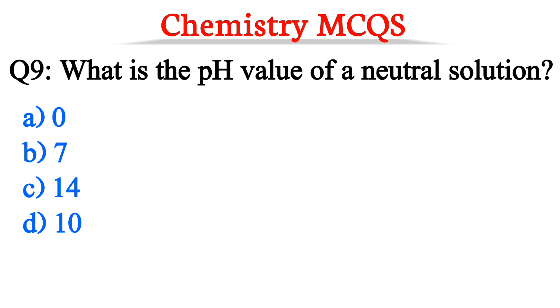Question number 9. What is the pH value of a neutral solution? The correct option is option B, 7.